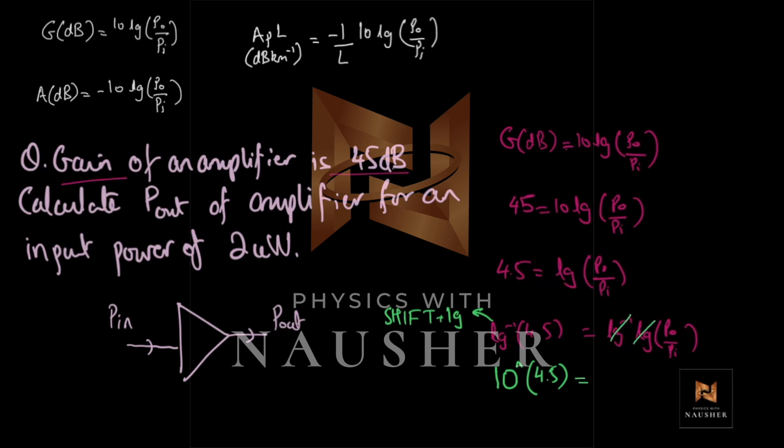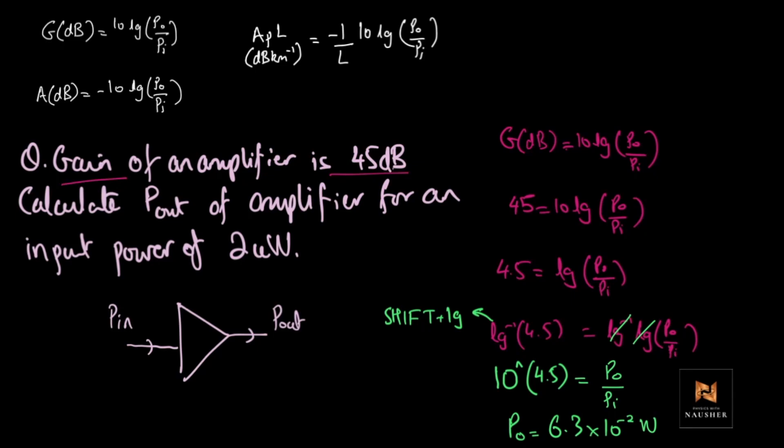Is equals to. Now, log inverse and log get cancelled. So, you get P output over P input. So, you have to put the P output value here. So, your answer will be 6.3 into 10 raised to minus 2 watts. That is how you do these calculations.